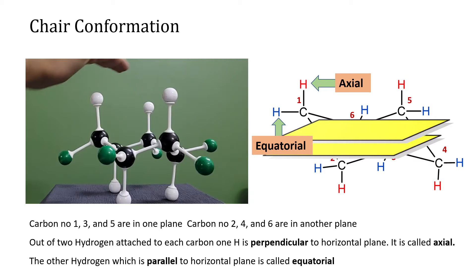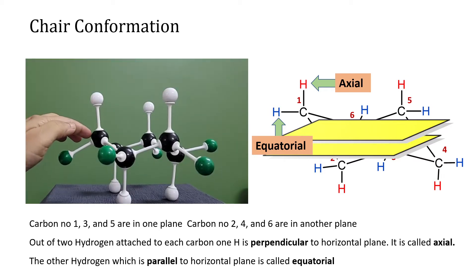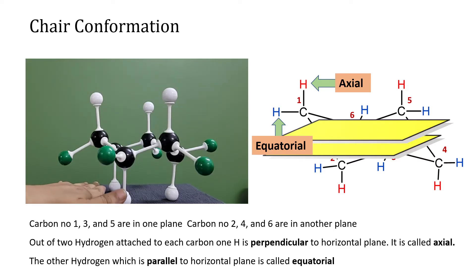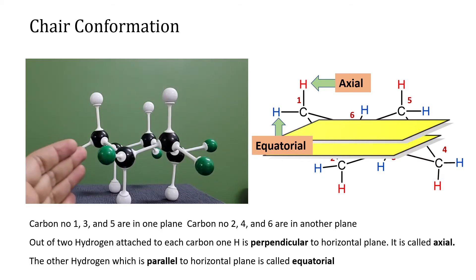Three axial hydrogens are above, attached to carbons one, three, and five, and three axial hydrogens are below, attached to carbons two, four, and six — so these bonds are not facing each other. Similarly, the equatorial hydrogens are not in the same plane and are not directly facing each other.